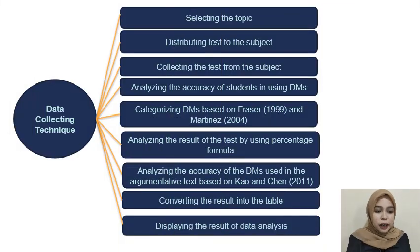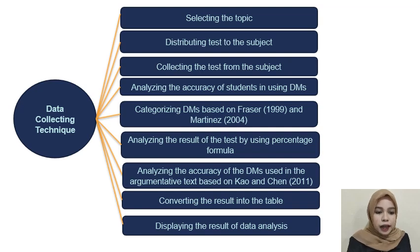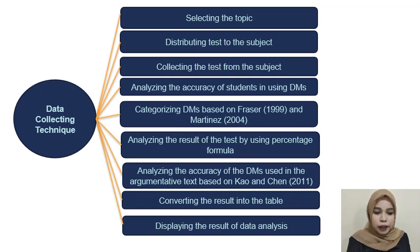The technique of collecting the data involved: first, selecting the topic; second, distributing the test to the subjects; third, collecting the test from the subjects; fourth, analyzing the accuracy of students in using DMs; fifth, categorizing DMs based on Fraser (1999) and Martinez (2004); then analyzing the result of the test using the percentage formula; and finally analyzing the accuracy of DMs used in the argumentative text based on Kao and Chen (2011), converting the results into a table, and displaying the result of data analysis.